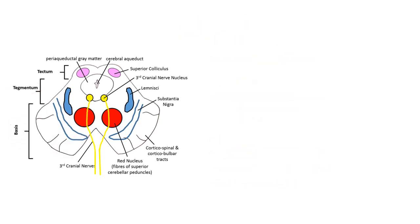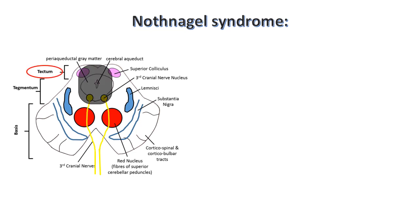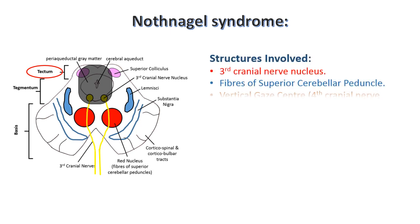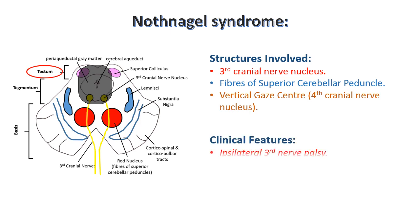Now coming to dorsal midbrain syndromes. Dorsal syndromes are usually caused by tumours. First is Nothnagel syndrome. Here the lesion is at the dorsal midbrain, that is at the tectum, as you can see in the figure. Structures involved will be the 3rd cranial nerve nucleus (either unilateral or bilateral), fibers of the superior cerebellar peduncle, and the vertical gaze centre, i.e. the 4th cranial nerve nucleus — because we already discussed that the 4th cranial nerve goes dorsally. Remember: tegmentum structures like the red nucleus are not involved. Signs and symptoms will be: due to involvement of the 3rd and 4th nerves, there will be ocular palsies and paralysis of gaze, especially vertical gaze palsy; and ataxia and tremors due to involvement of the superior cerebellar peduncles.